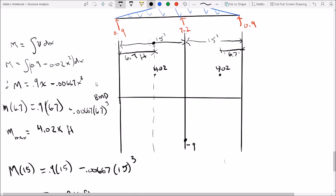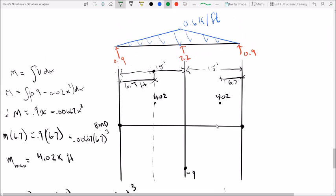So now we've found out all of our locations and our moments. We know that zero at A, zero at C because you have a pin and a roller so there can't be any moment. And at B we have a negative 9 moment, at our maximum of 4.2 and 4.2 in both locations. So now we need to look at the concavity of our bending moment diagram.